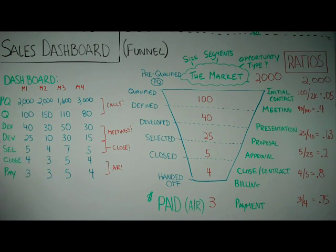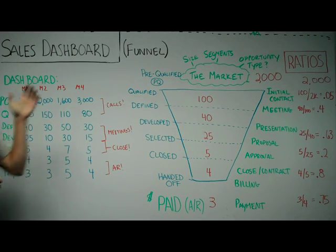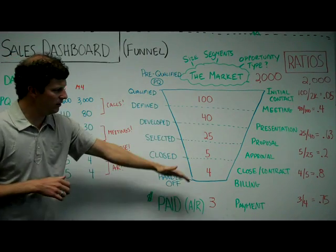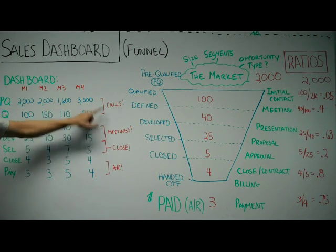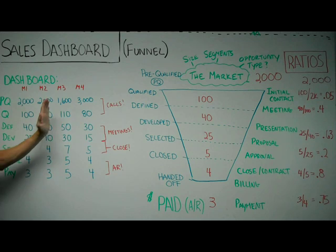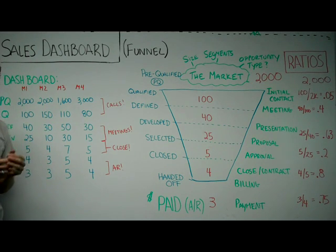So hopefully this gives you some idea of how a dashboard works. I'm looking at my funnel. I'm taking those ratios. I'm watching them in a given month to diagnose what I'm good at or bad at. And then I'm watching that trending over time.